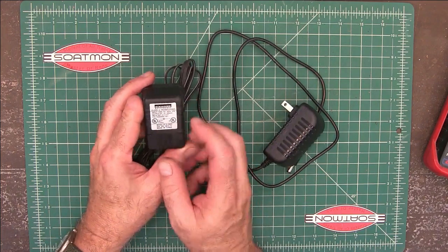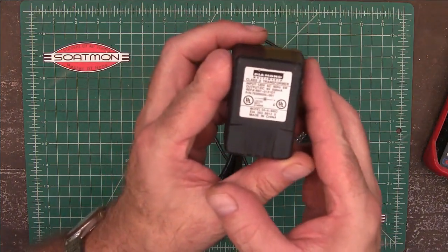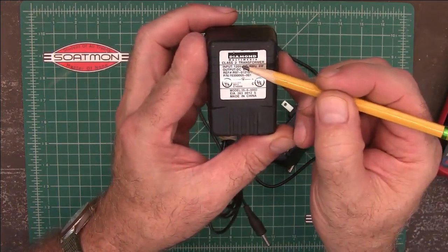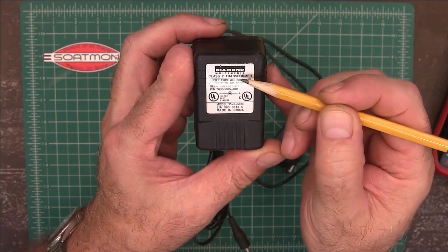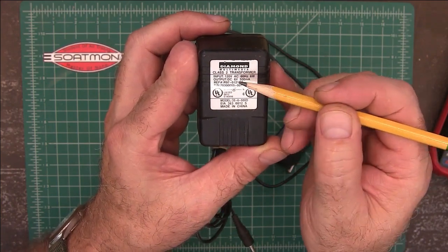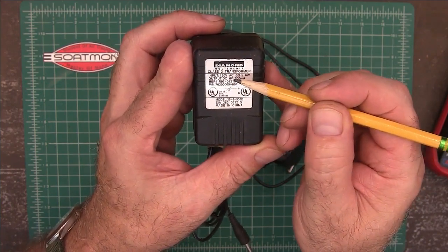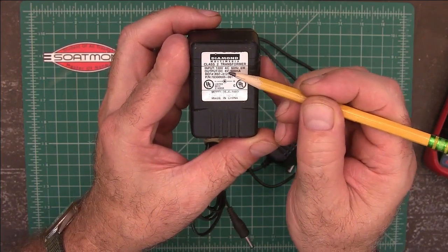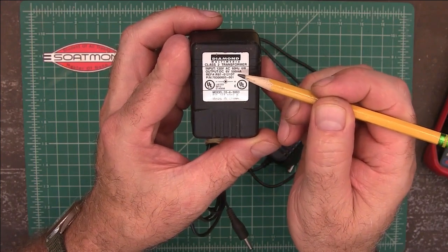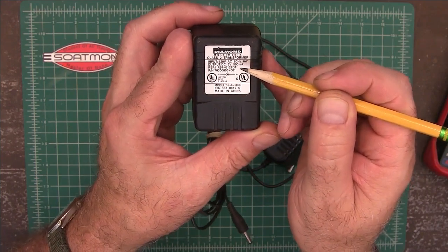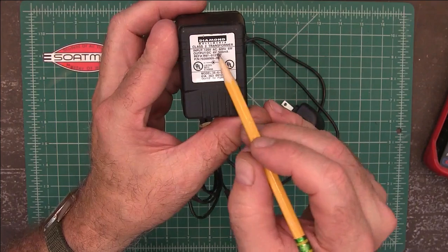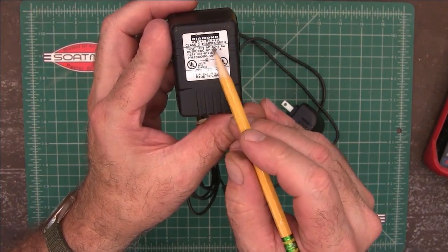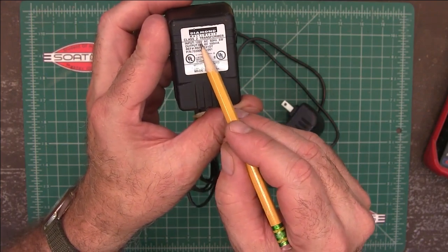And so you can see on this one right here, it says input 120 volts AC, output DC six volts, 500 mA, which is six volts at 500 milliamps, or a half an amp. So this will supply the output six volts at a half an amp, and it will run off of 120 volts.